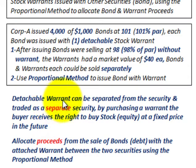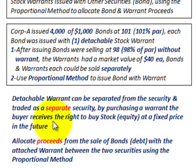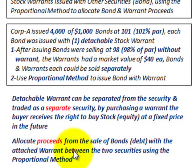A detachable warrant can be separated from the security — in this case the bond — and traded as a separate security. By purchasing a warrant, the buyer receives the right to buy equity in the company at a fixed price in the future. We have to allocate the proceeds from the sale of the bonds with the attached warrant between the two securities using the proportional method.